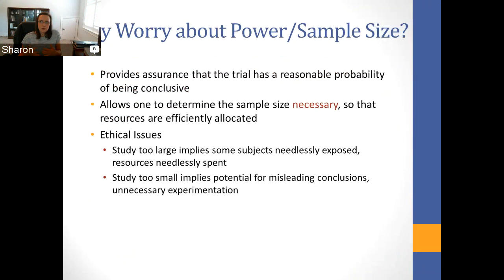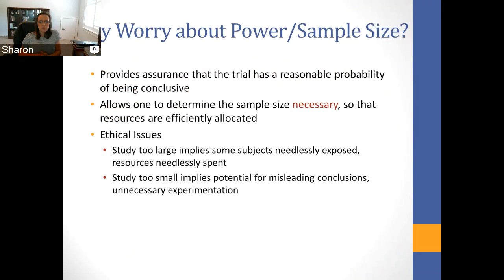So why do we worry about power and sample size? In many discussions with junior investigators, it is sort of a last-minute thought — 'Oh, I have to justify this.' I would argue that it really needs to be considered on the front end of your experimental design, because what we're really looking for is a sample size that provides assurance that the trial has a reasonable probability of being conclusive. Our resources are not infinite — NIH does not have money to cover all of the interesting questions, and there are not enough patients in each disease area to cover all potential treatments.